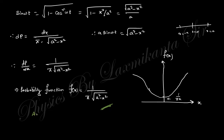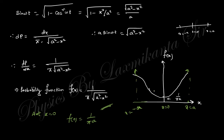So the probability function is dP/dx = 1/(π√(a² − x²)). If you draw this function: at x = 0, the value is 1/(πa); as x → ±a, the function tends to infinity. So it diverges at x = −a and x = +a, covering the range from −a to +a.